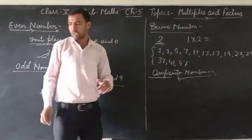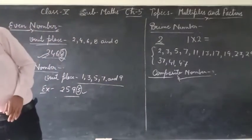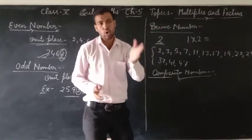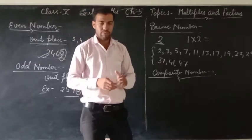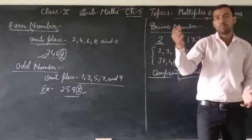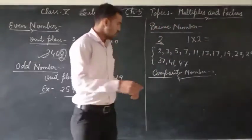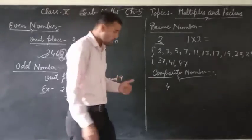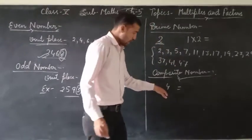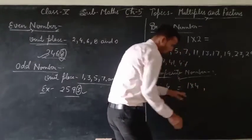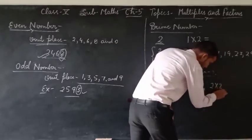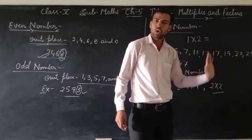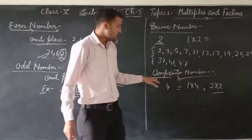In a composite number — a number that has two or more factors — that's called a composite number. For example, take the number 4. 4 is a composite number. Why? Because 4 has more than 2 factors: 1 × 4 and 2 × 2. So 4 is a number having 2 or more than 2 factors. These are composite numbers.